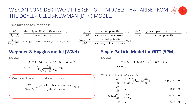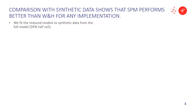Let's see how these models perform. We generate some synthetic data by solving the DFN half-cell model and then feed the two reduced models to the synthetic data to see what estimates of the diffusion coefficient we get. Because it's synthetic data, we know the actual value. To implement this, we use PyBAM, a Python-based open source battery modeling package. If you're interested in PyBAM, I suggest you check the talk by Robert Timms on PyBAM.